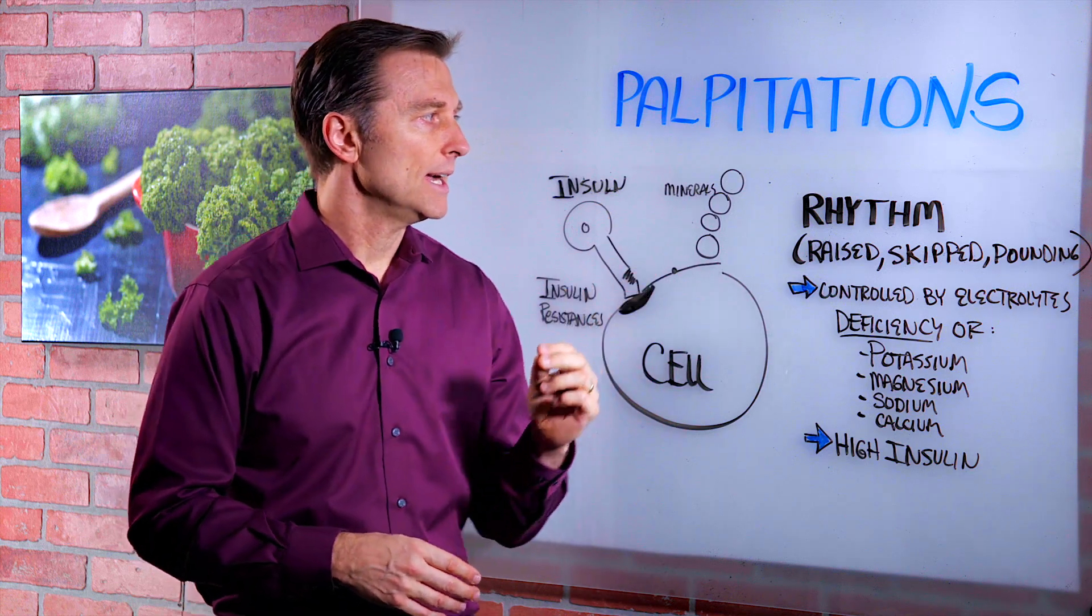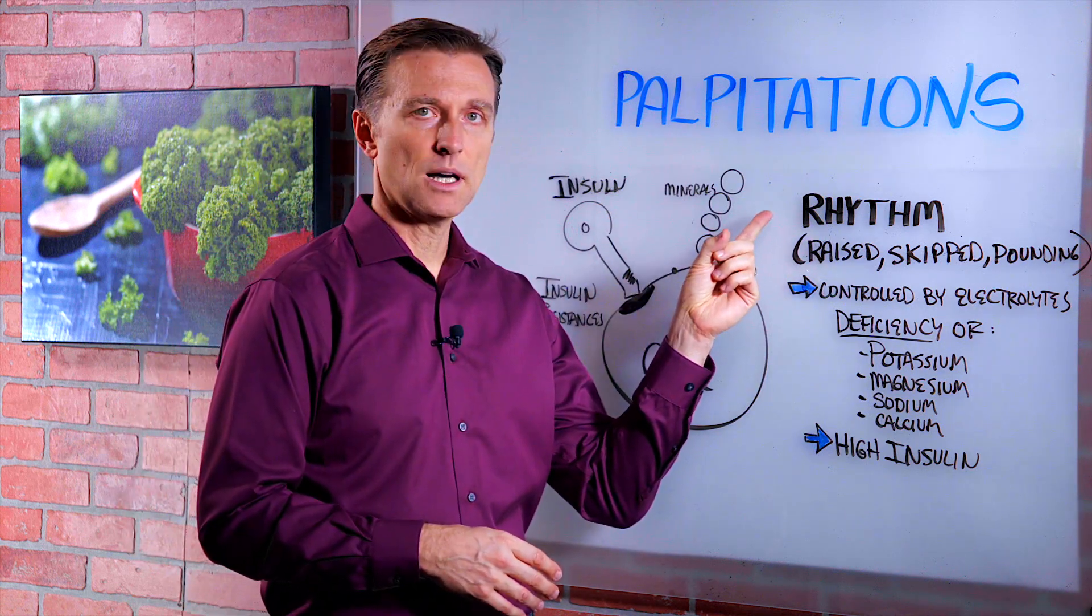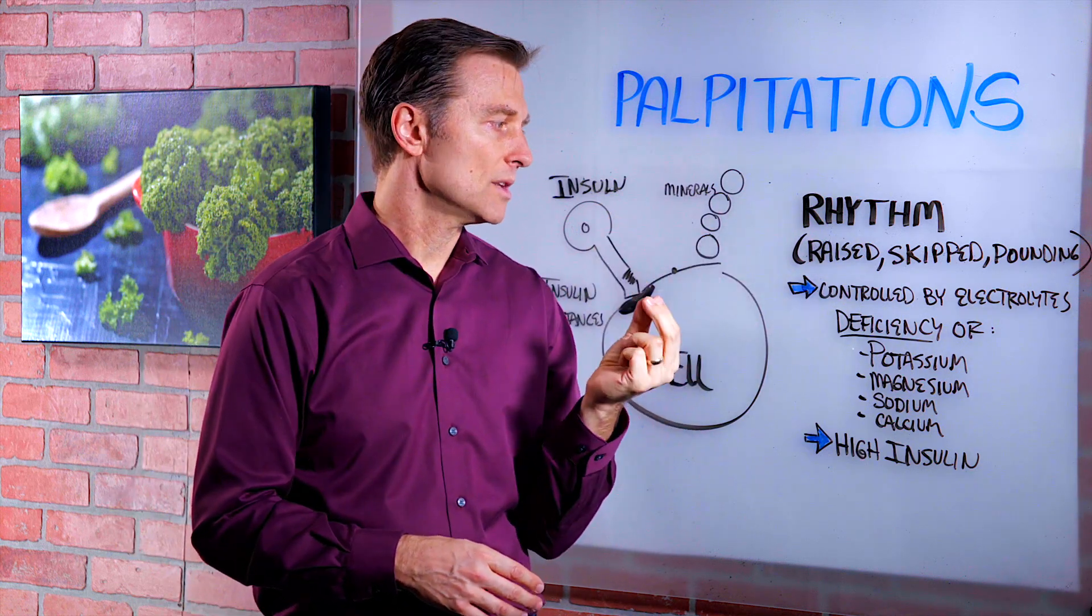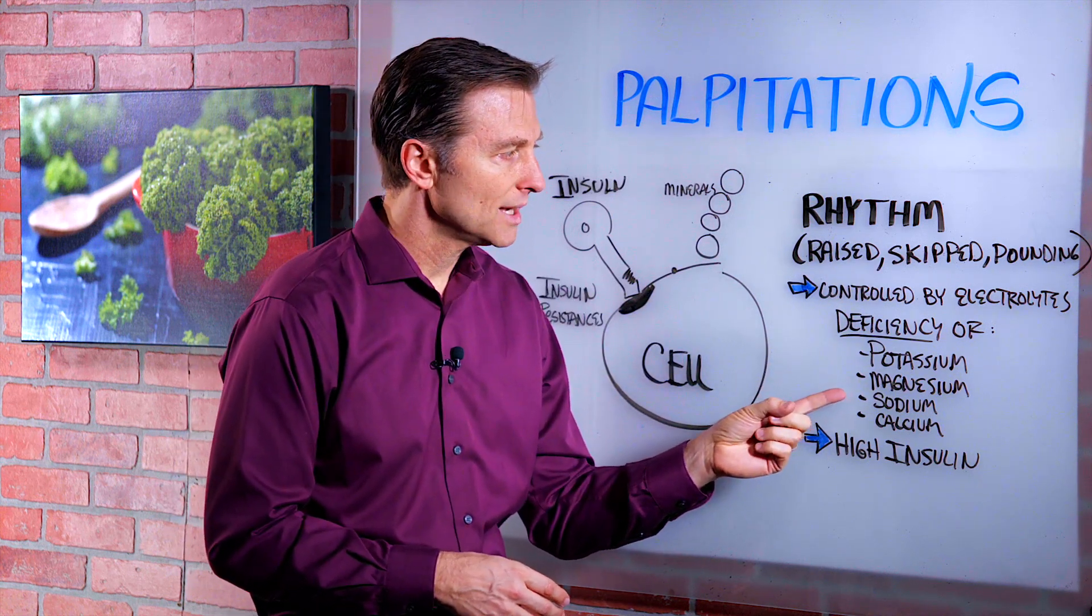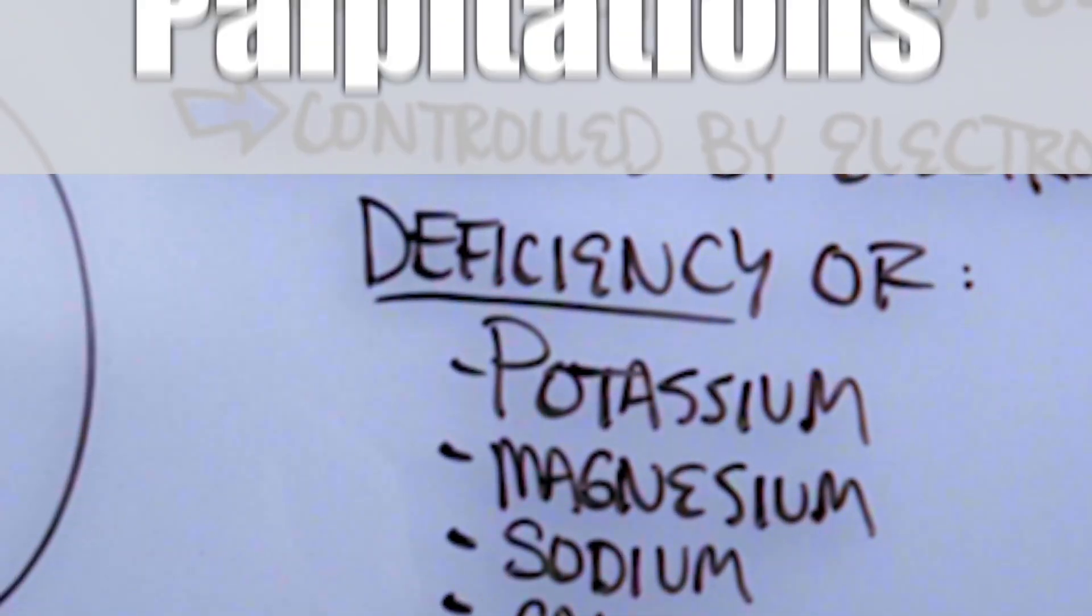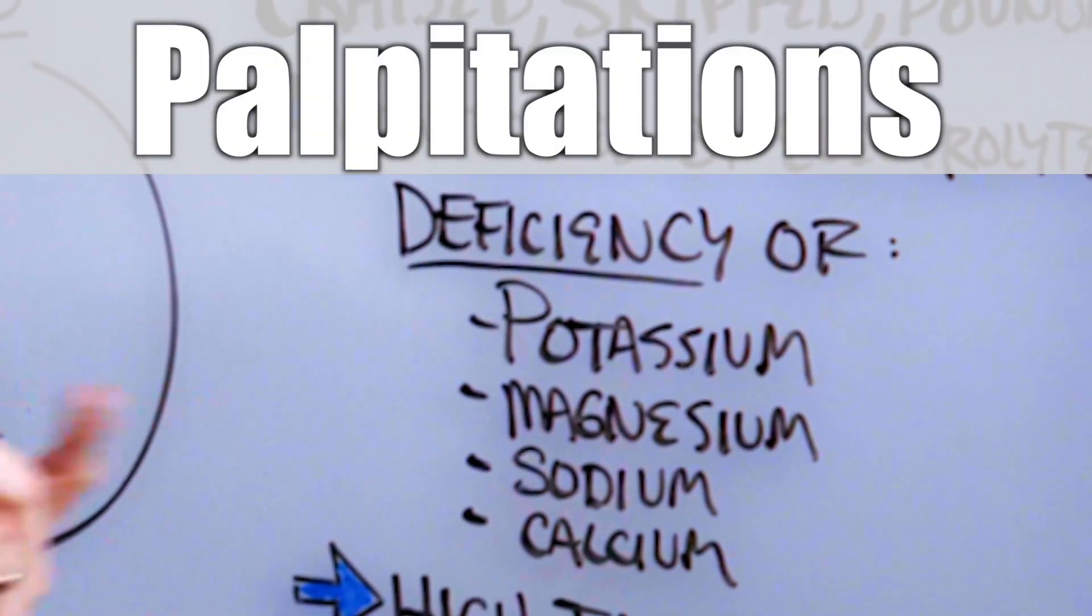But palpitations are a problem with the rhythm of the heart and what controls the rhythm are electrolytes. That would be like potassium, magnesium, sodium, and calcium. So palpitations really are a deficiency of these electrolytes.